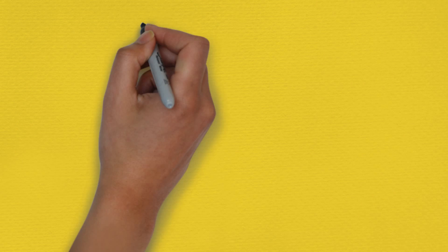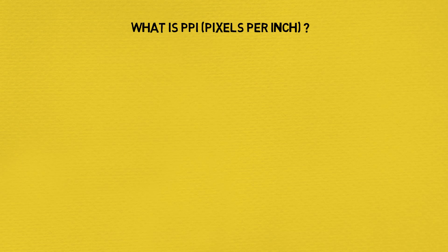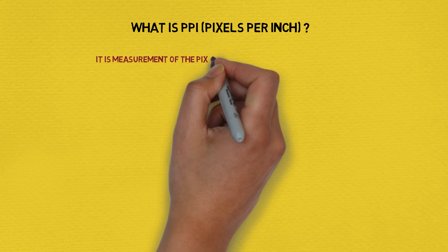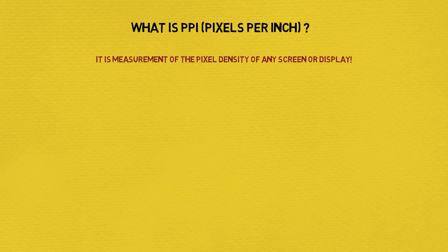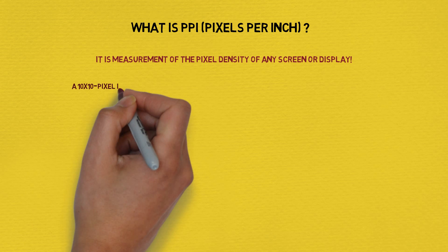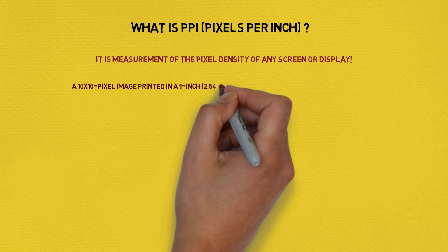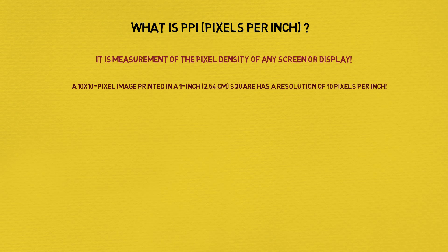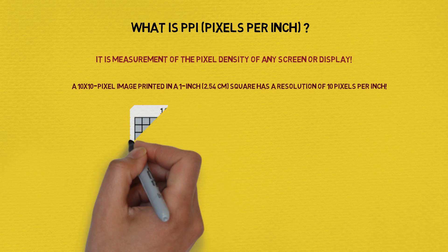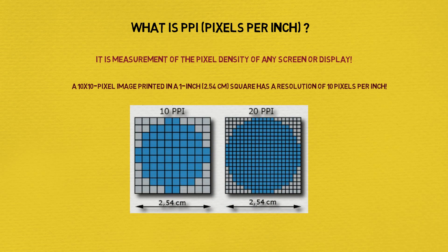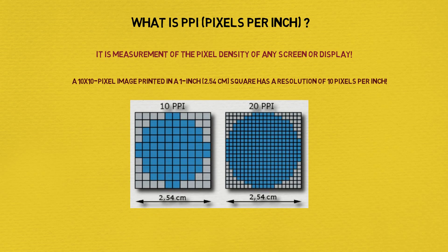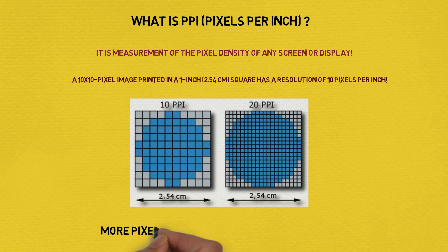Now let us see what is PPI or pixels per inch. It is a measurement of the pixel density of any screen or display, and it also defines the resolution of a screen. For example, a 10x10 pixel image printed in a 1 inch square has a resolution of 10 pixels per inch. Similarly, a 20x20 pixel image printed in a 1 inch square has a resolution of 20 pixels per inch. A greater number of pixels in a screen means you can see more details, which results in better quality.